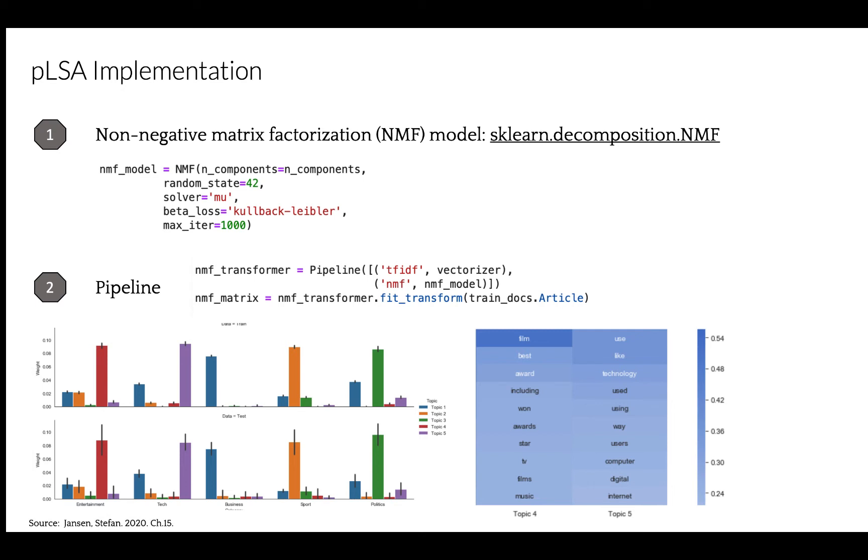For example, entertainment category is most directly associated with topic 4 in red. In the figure on your right, we can see the topic 4 includes words such as film, star, award, and so forth, which are in fact related to entertainment industry.